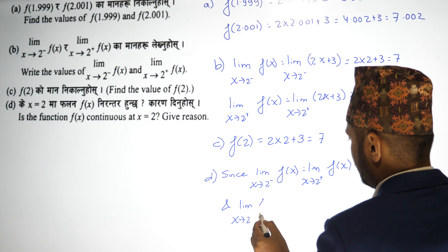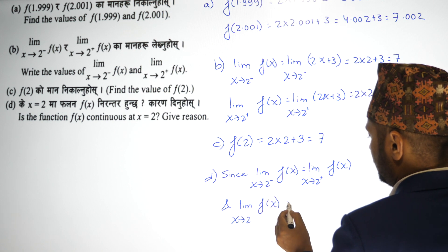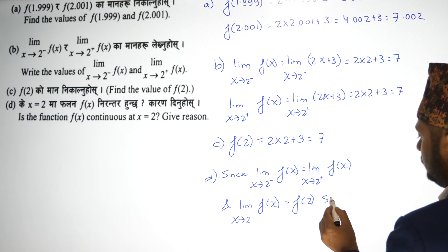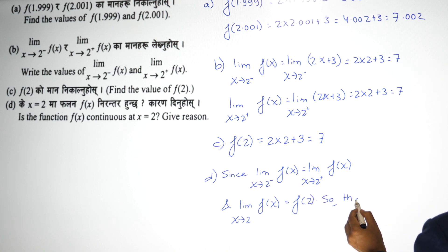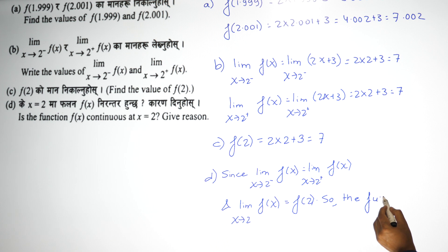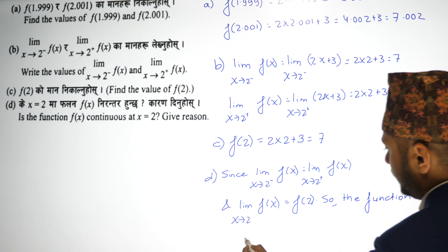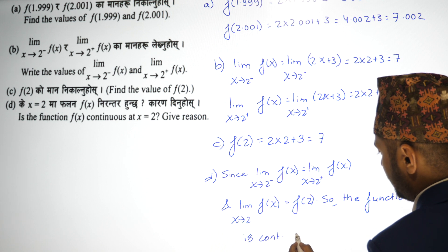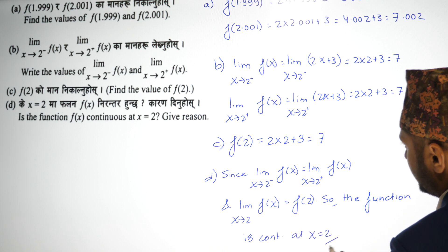The limit as x approaches 2 of f(x) equals f(2), so the function is continuous at x equals 2.